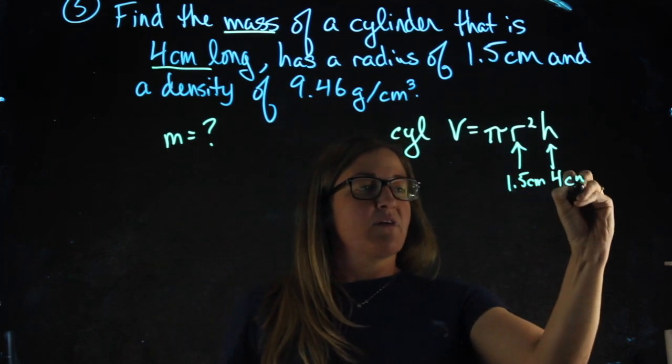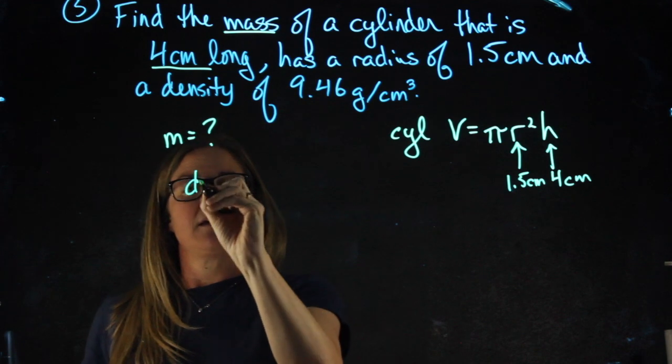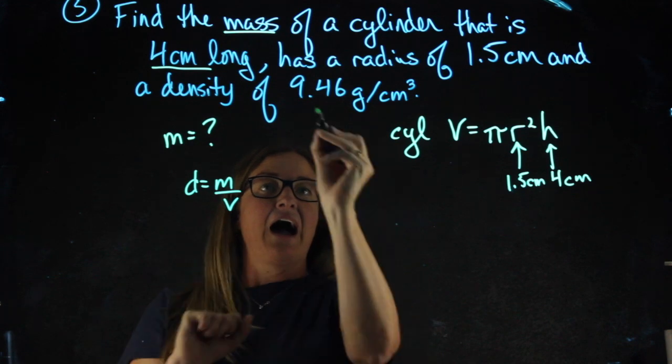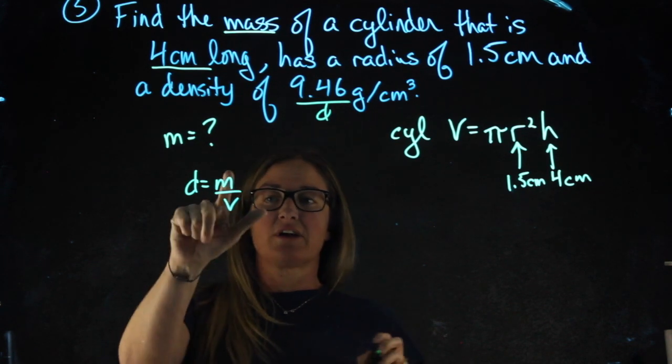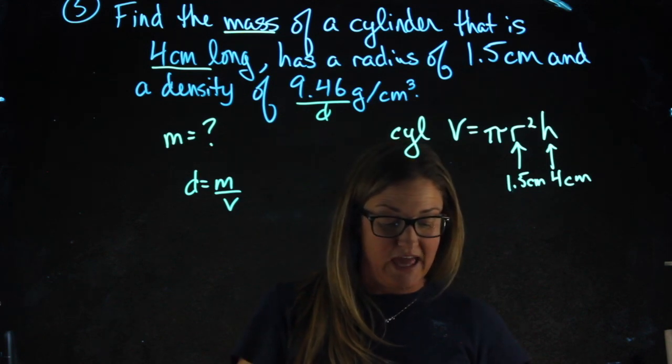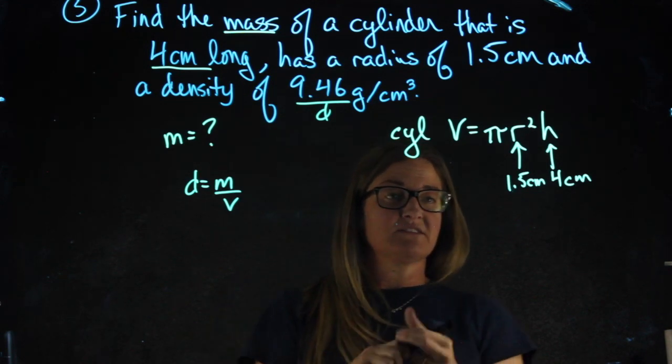The other formula that we're going to need is density equals mass over volume. So for this problem, I know the density. I'm looking for the mass. I don't have the volume yet, but I have enough information to get it. So first I'm going to solve for the volume.